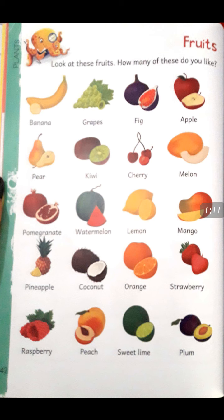Let's identify the fruits by their names and pictures. First one is banana, grapes, fig, apple, pear, kiwi, cherry, melon, pomegranate, watermelon, lemon, mango, pineapple, coconut, orange, strawberry, raspberry, peach, sweet lime, and last, plum.